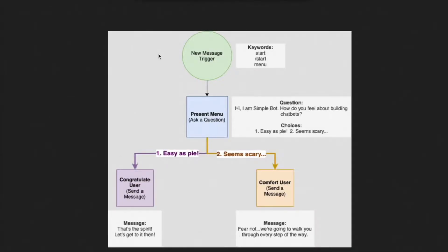Even for simple bots, it's a great idea to diagram out the structure of your flows before you begin. Here's an example for our bot. The flow starts with a trigger that will listen for the words start, slash start, and menu. When the flow is triggered, the bot will ask the following question.